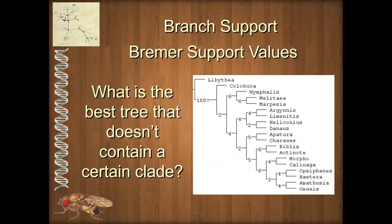The first branch support method, maybe the simplest, is called a Bremer support value. Bremer support values can only be performed in parsimony analyses, and they're very simple. Basically, what you do is look at each branch and say, in my best tree overall we have these two taxa as sister groups — then find the next best tree that breaks those up. We search a whole bunch of trees and find the tree with the best score that doesn't include those two together.